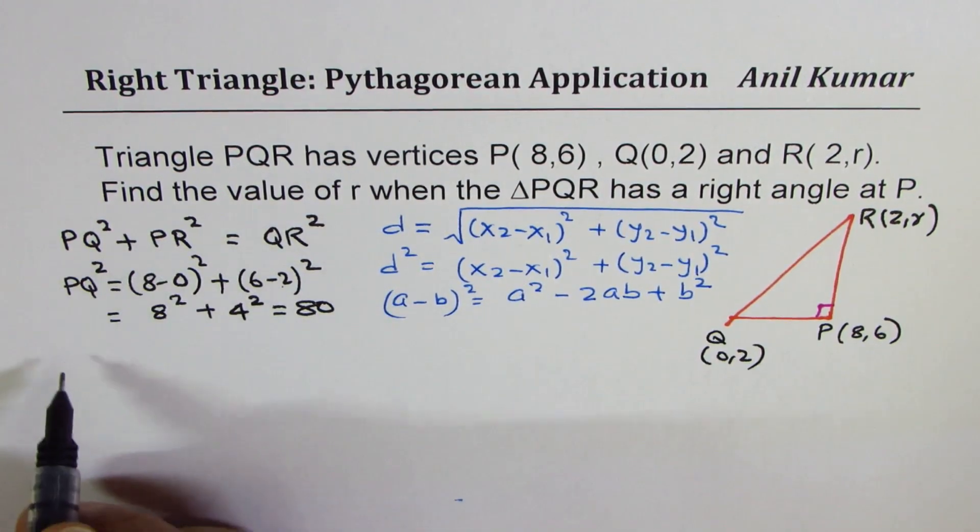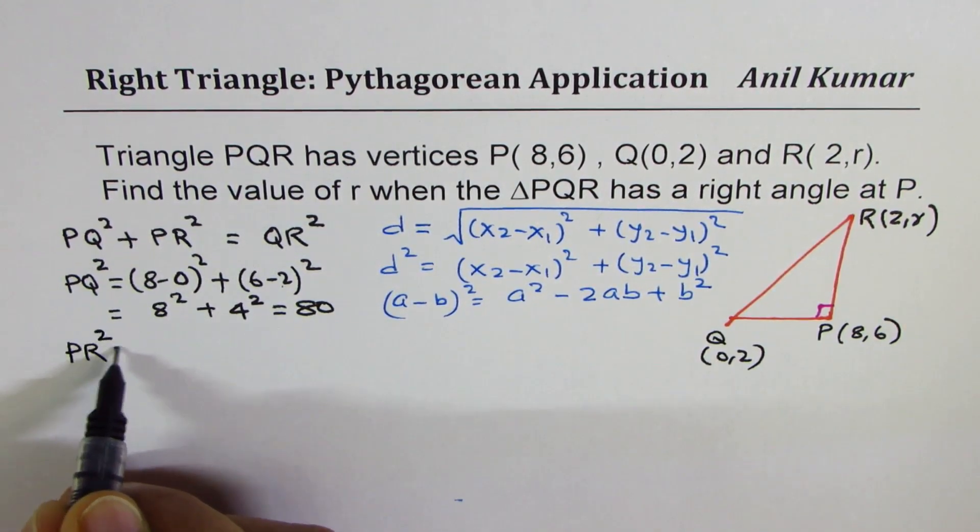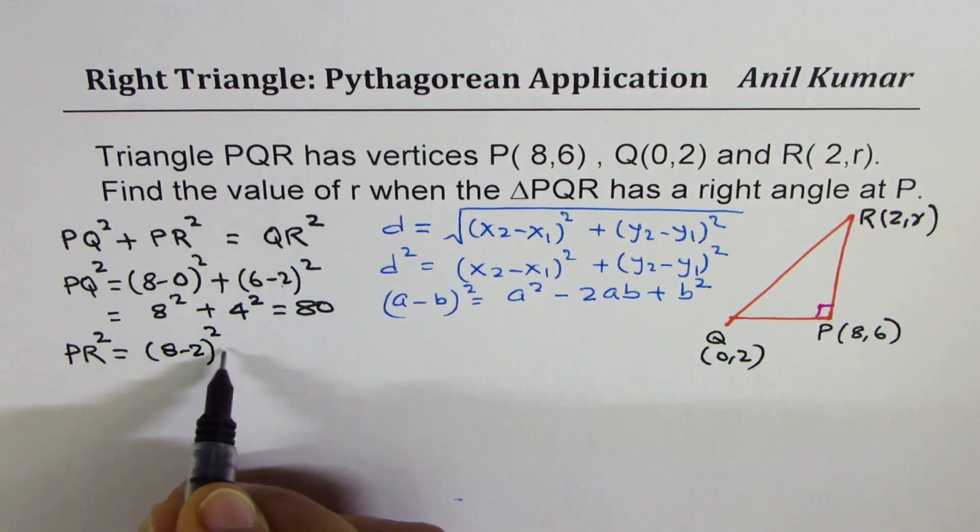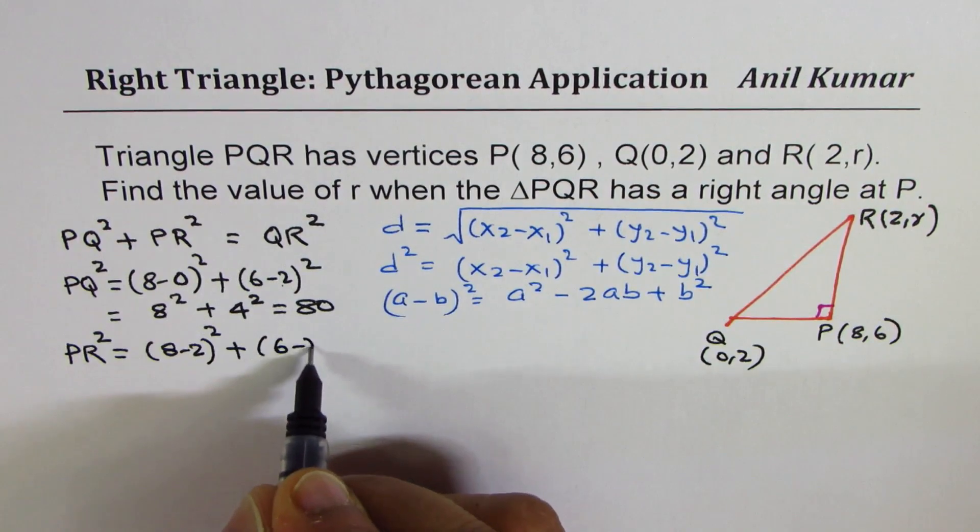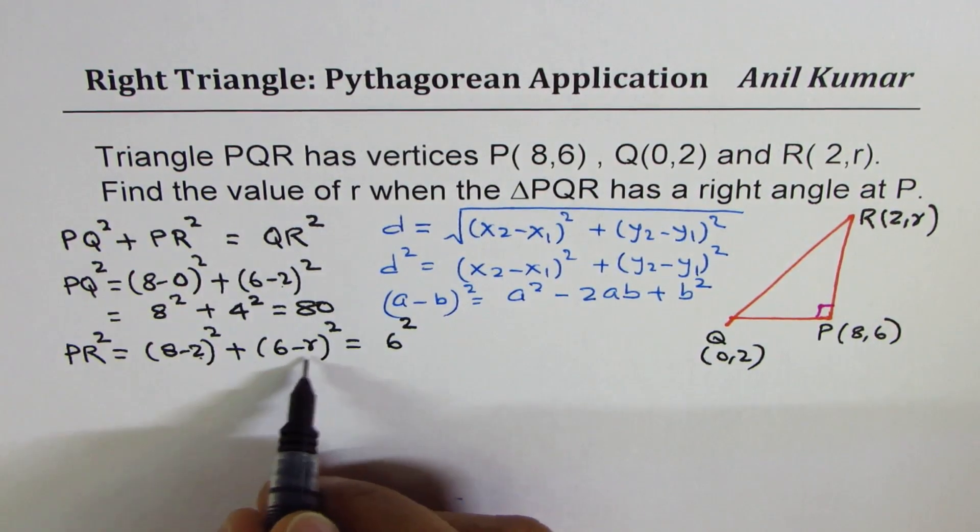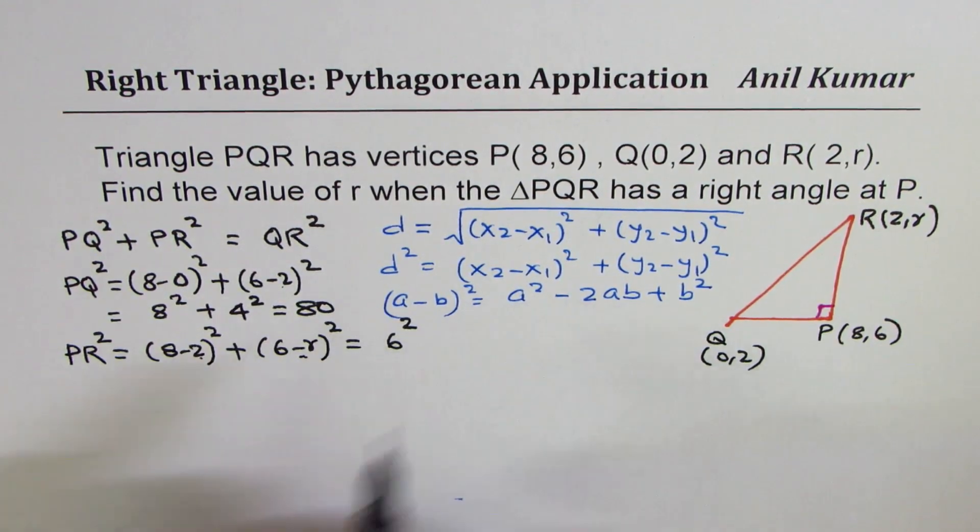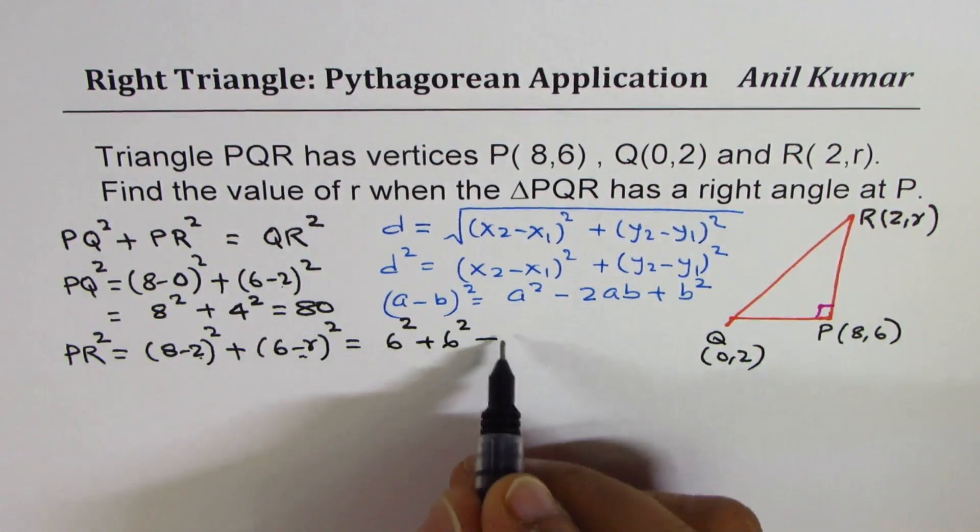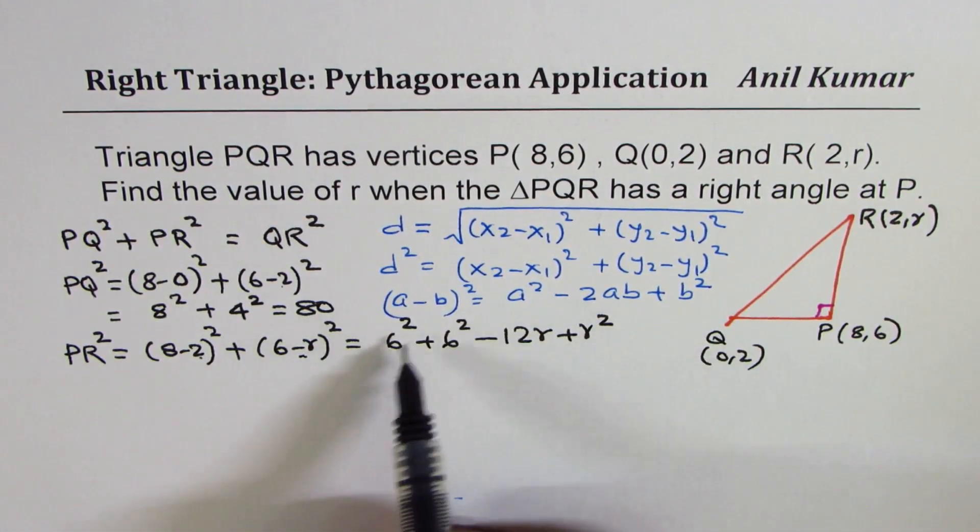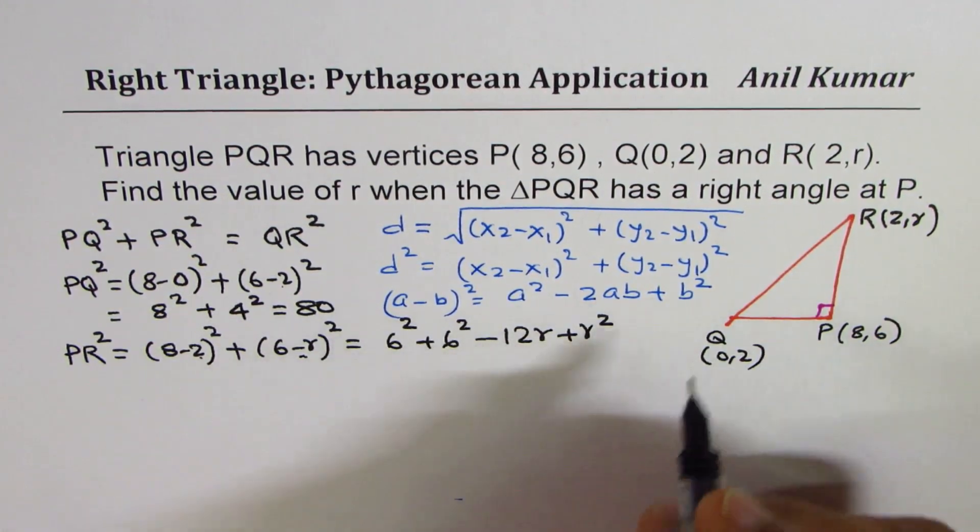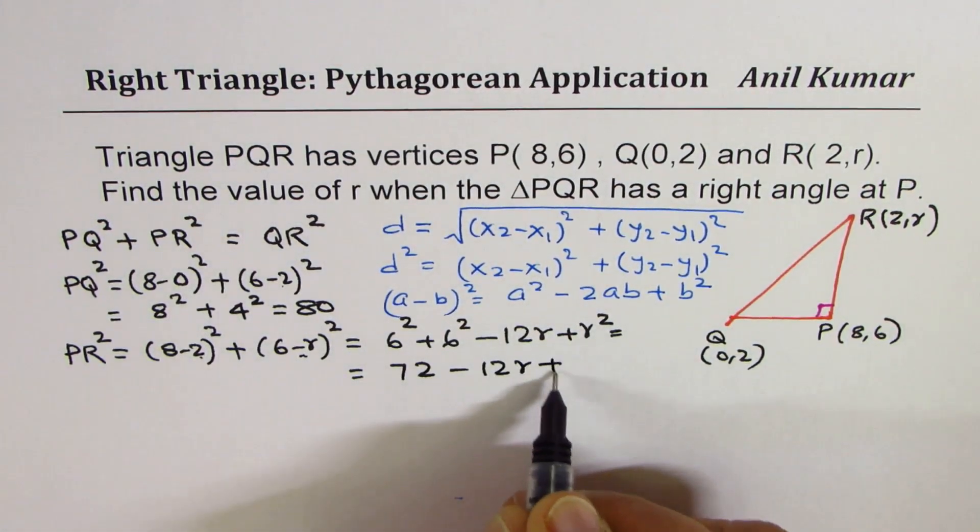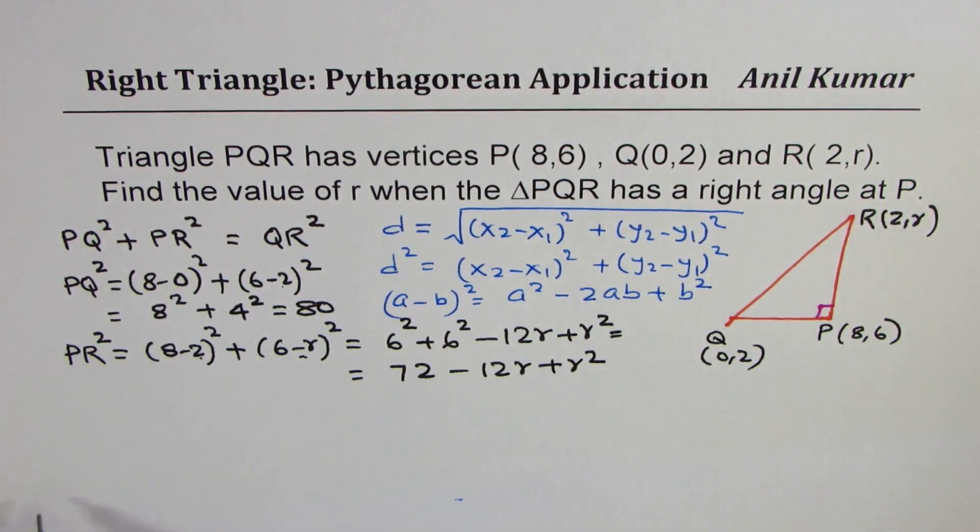Now let's find what PR is. PR² will be (8-2)² + (6-r)². Now, 8 minus 2 is 6. We can write 6². And let us expand (6-r)² using this formula. So we get plus 6² minus 2 times 6 is 12r, and plus r². So that gives us 36, 36 is 72. So we can write this as 72 - 12r + r². So that is PR².